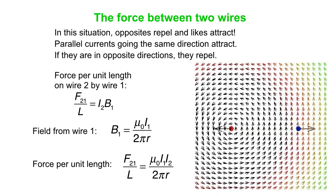This is a lot like k q1 q2 over r squared, but again it's r instead of r squared. Instead of q's you've got i's, and instead of k you've got mu naught over 2 pi.